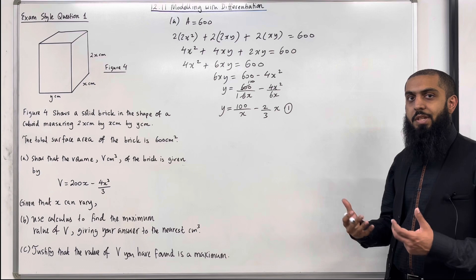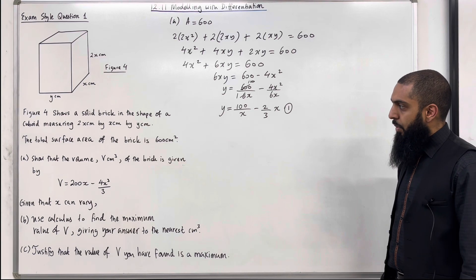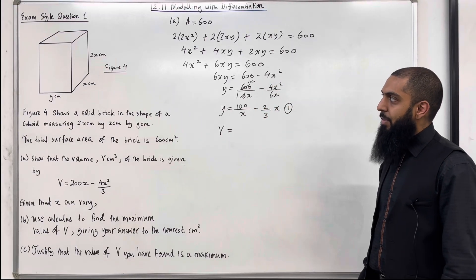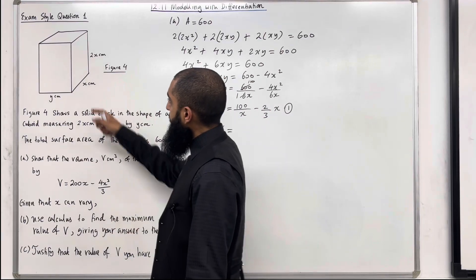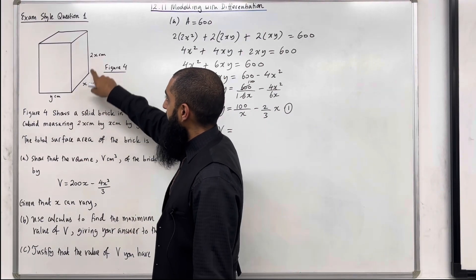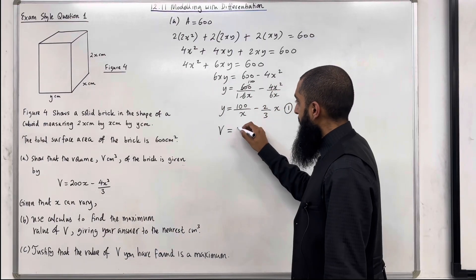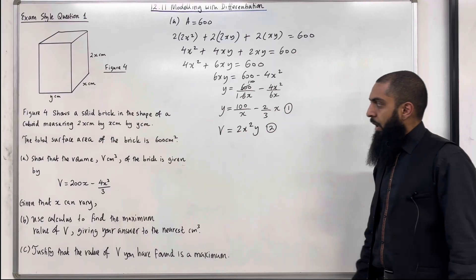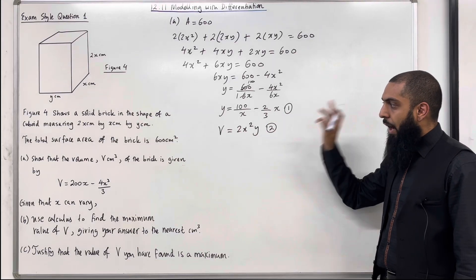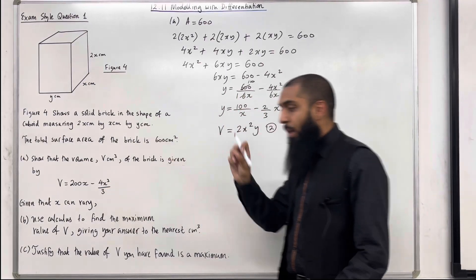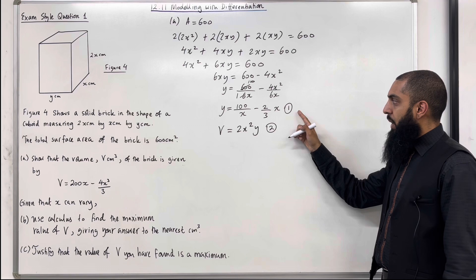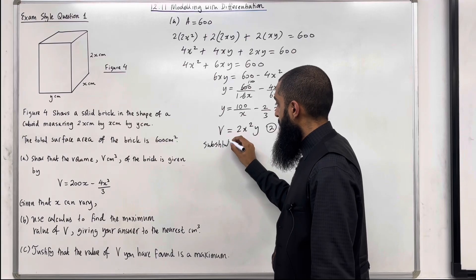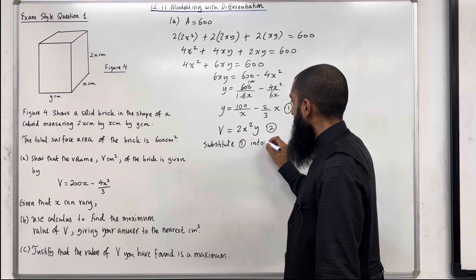Now I'm going to derive a formula for the volume of this cuboid. The volume is given by length multiplied by width multiplied by height. So what we have is y times x times 2x, which gives us 2x squared y. Call this equation 2. I don't want the volume in terms of x and y — I only want it in terms of x. So I need to eliminate y by substituting equation 1 into equation 2.